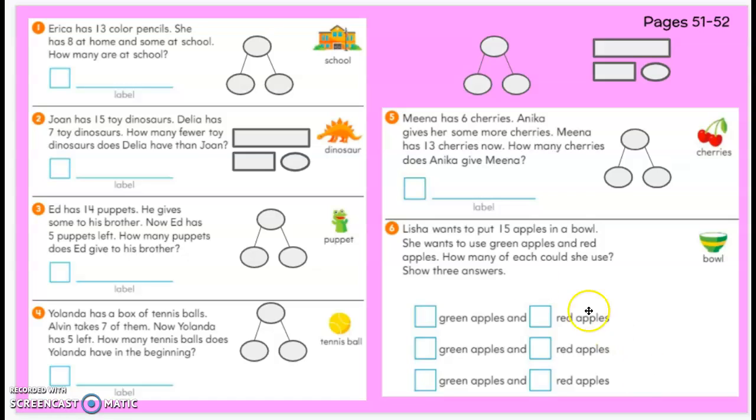So for this one, how many of each could she use? Show three answers. This table, it's kind of like an organization, a little table here. This is going to be all you need to answer for number six. You do not need to complete a DEAL for that one.